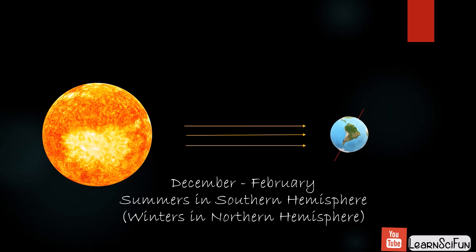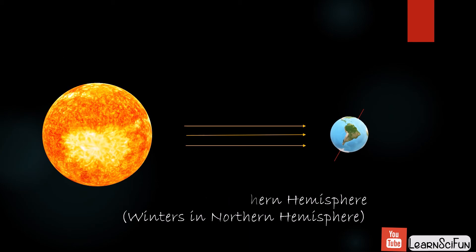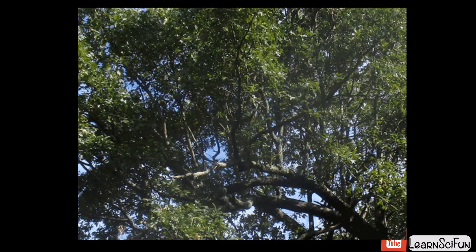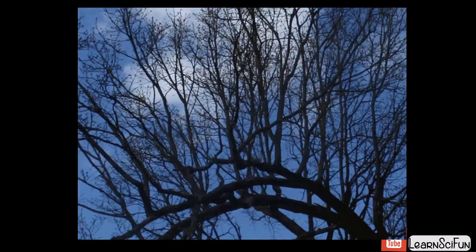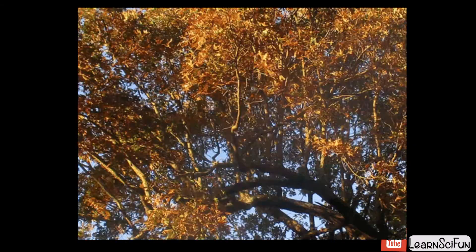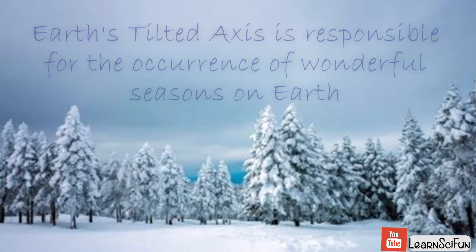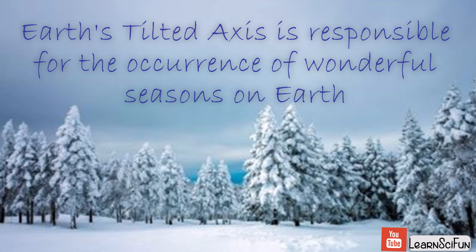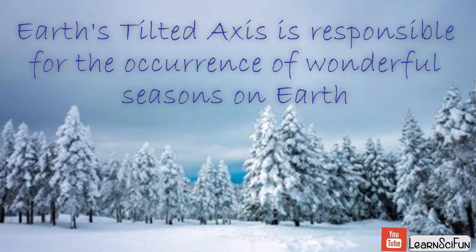It might appear convincing that it's winter when Earth is farthest from the Sun and summer when it's closest, but this variation of distance is too small to cause the change of seasons.